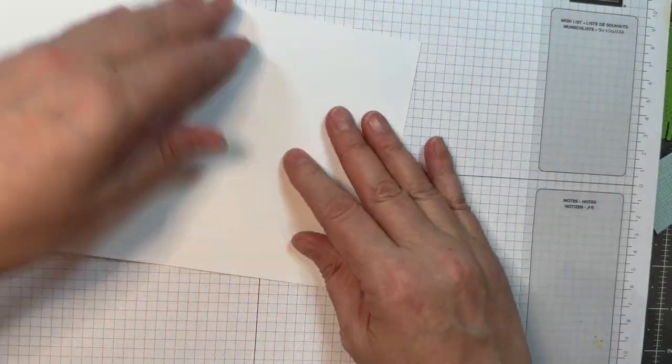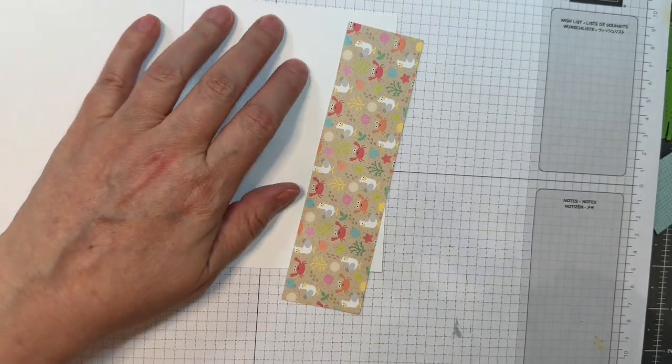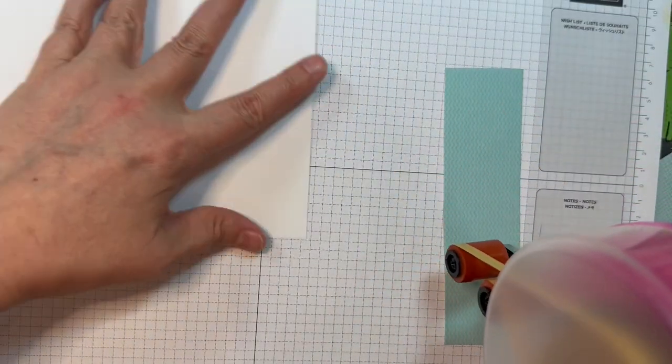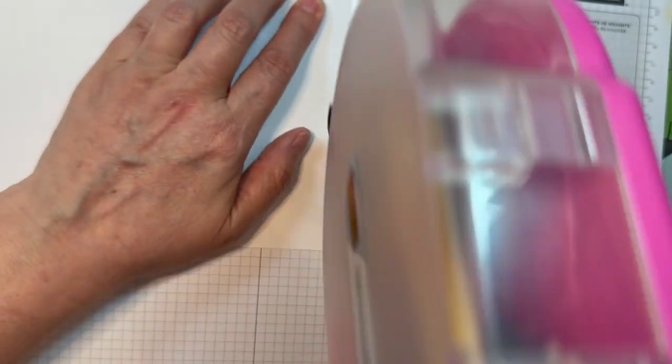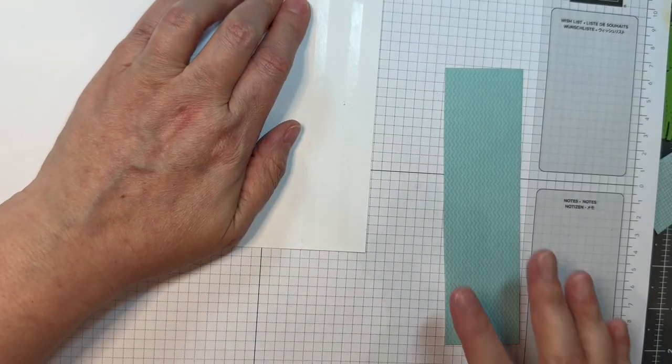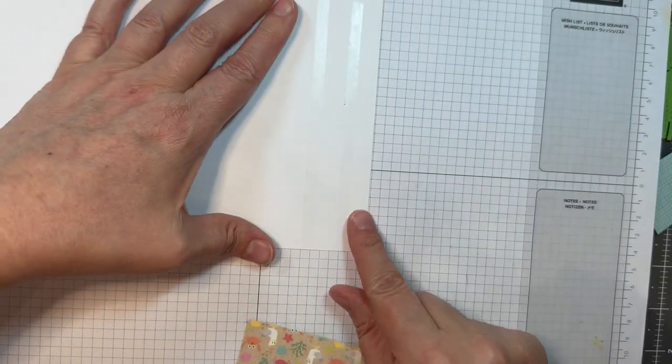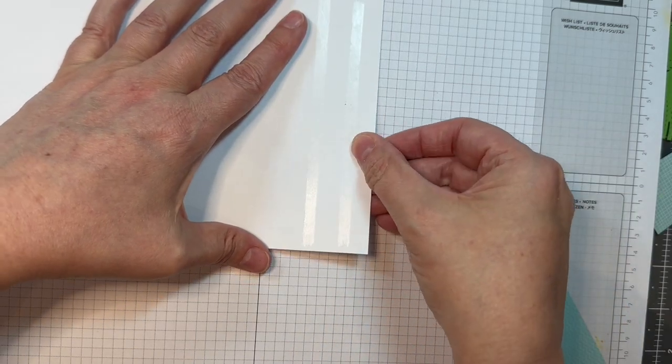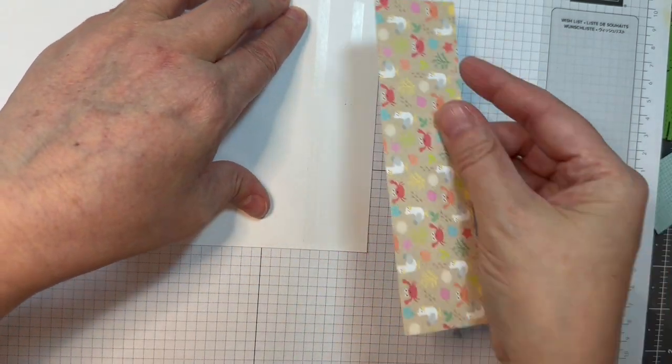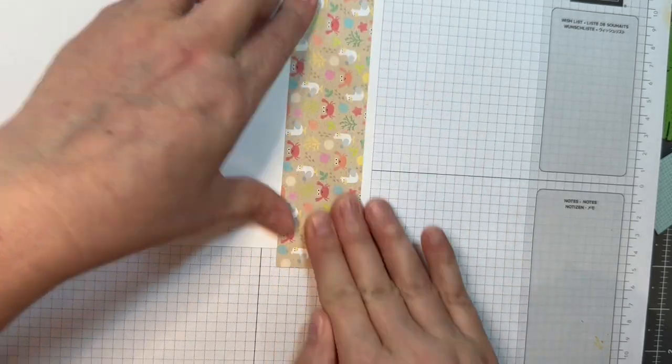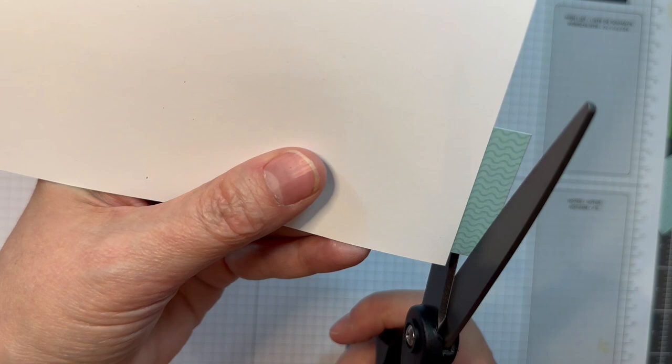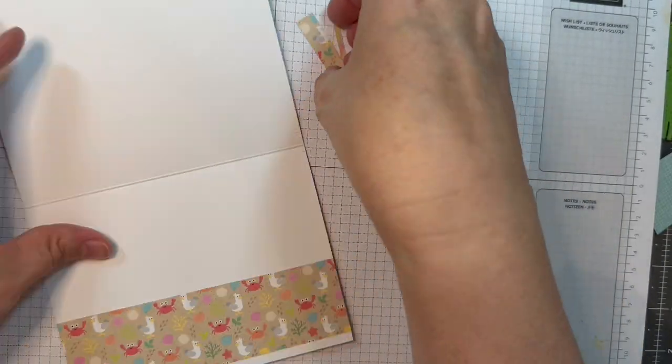Then on the inside I'm going to add a strip of that same paper from that strip and I'm just going to put that down roughly a quarter of an inch from the bottom. I use my Stampin' Up Pad to try and line things up. Then I'll trim off the overhang with a pair of scissors.